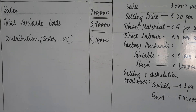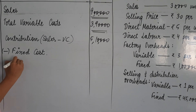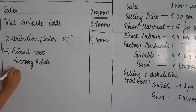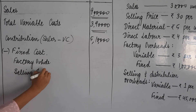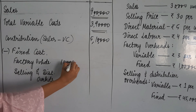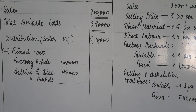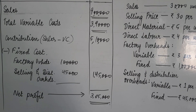Now there is a need to subtract fixed cost. Poore question mein do tarah ki fixed cost given thi: ek factory overheads fixed nature ke hain aur ek selling and distribution overheads fixed nature ke hain. Fixed factory overheads: ₹1,00,000. Fixed selling and distribution overheads: ₹45,000. Total fixed cost = ₹1,45,000. Subtract it from contribution and we get net profit of ₹3,65,000.